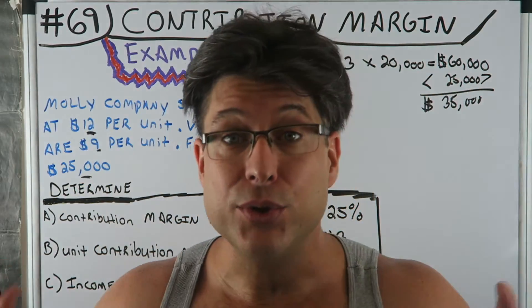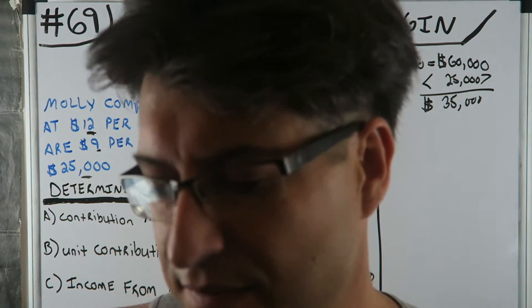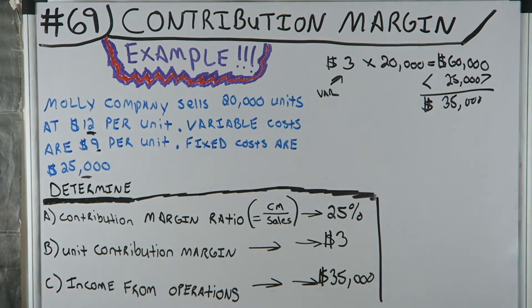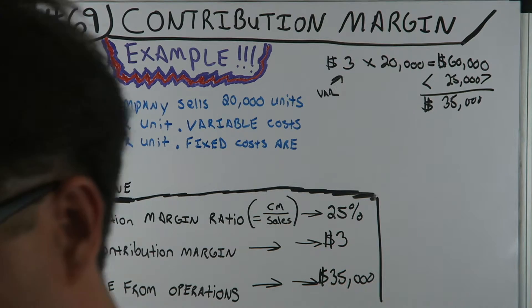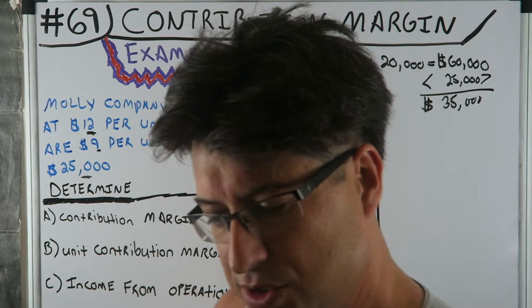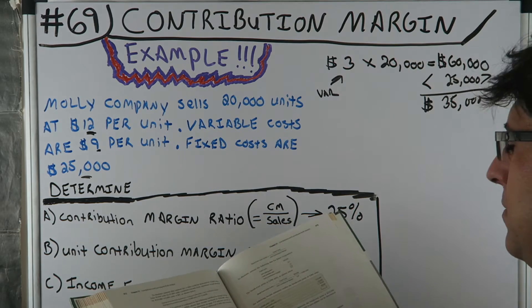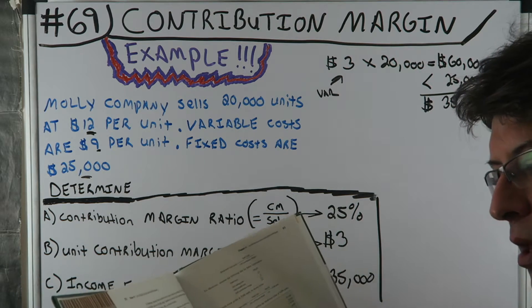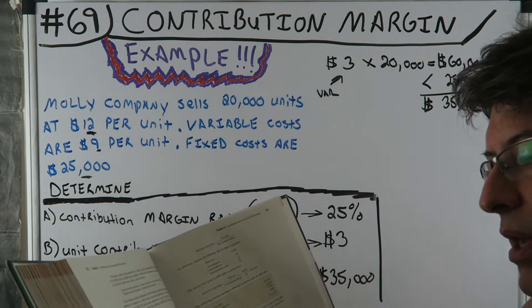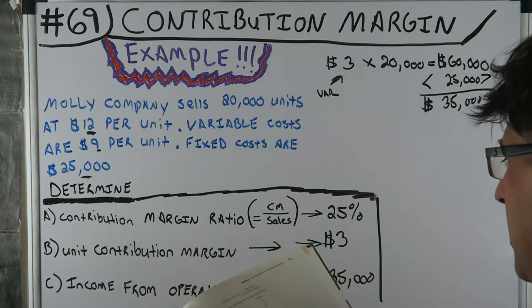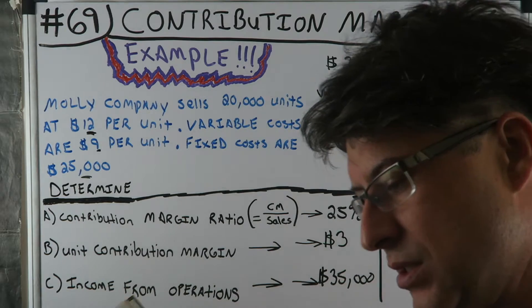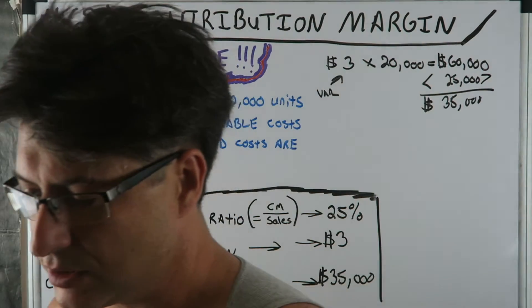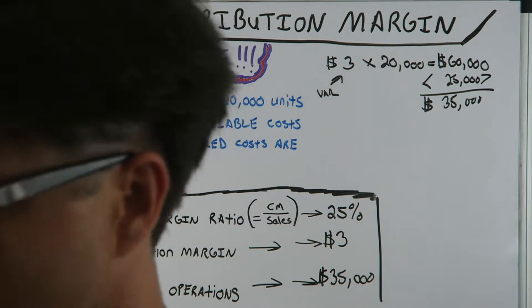Let me verify — checking my book: A is 25%, B is $3, C is $35,000. Correct. I do not want to give misinformation to any of my viewers.